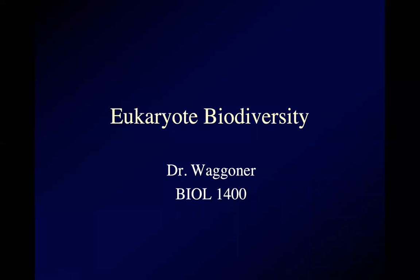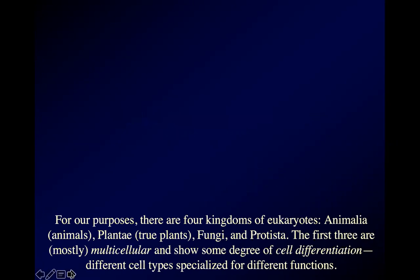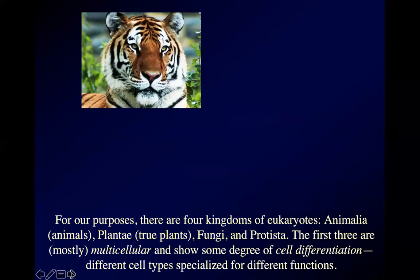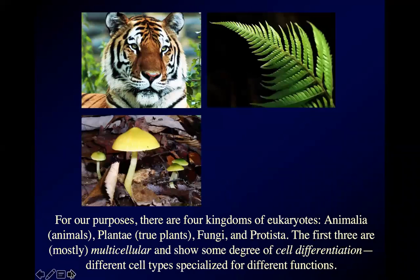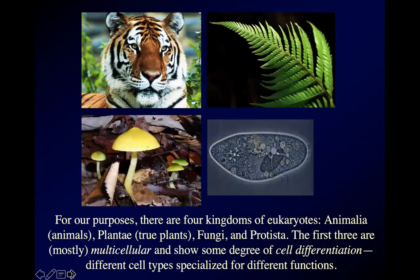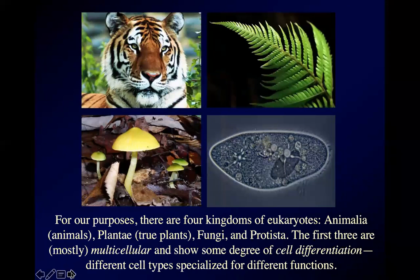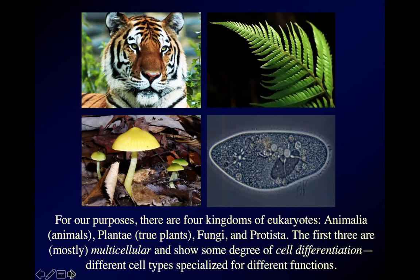I want to finish talking about the kingdom Animalia. We have already gone through this: for our purposes, we have four kingdoms of eukaryotes — Animalia, which is the true animals; Plantae, true plants; Fungi; and the Protista, which is everything else. Those first three are mostly multicellular with some degree of cell differentiation, although there are a few instances where that's violated, like yeast in the case of Fungi.